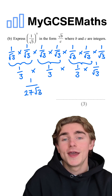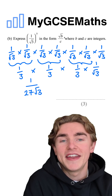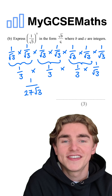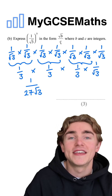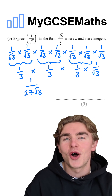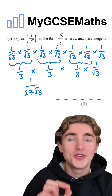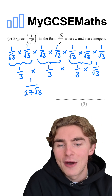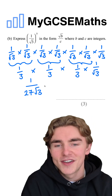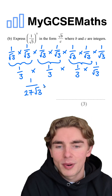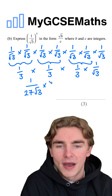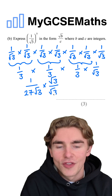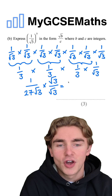Moving forwards from here, we can see that we need this in the form root b over c, so we're going to get rid of the root 3 on the bottom. How do we do that? We're going to rationalize our denominator. So we're going to multiply the top and bottom by the square root of 3, which is the root 3 currently on the bottom.